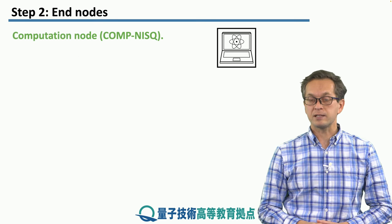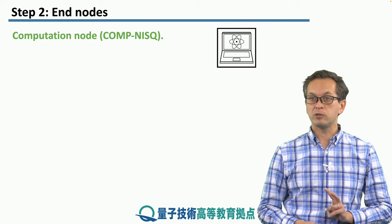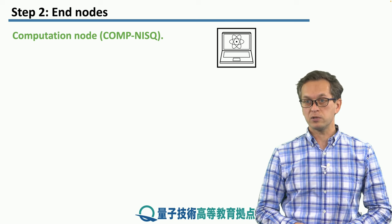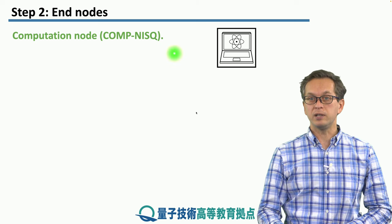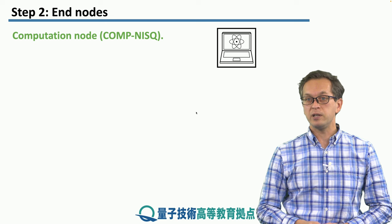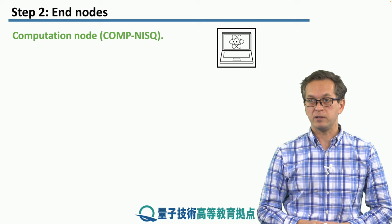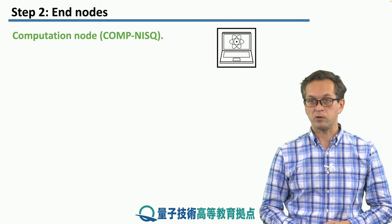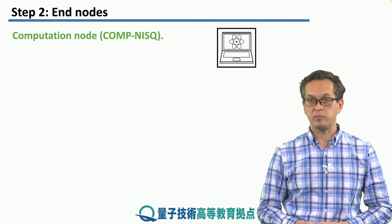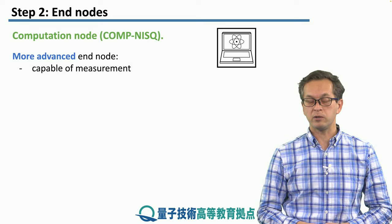The next type of node is a slightly more advanced node called computational node. We're going to talk about two different types of computational nodes. The first one is CompNISC, where NISC stands for Noisy Intermediate Scale Quantum. So this will be the type of nodes that will be first implemented in a quantum network, or they're very likely to be the first ones implemented.